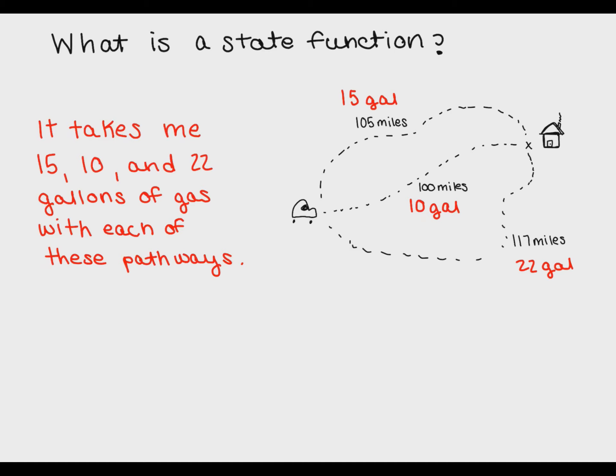Now let's look at an example that is not a state function. For each way I go home my car requires a different amount of gas. This means that the amount of gas I use is not path independent and it is not a state function.